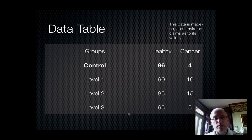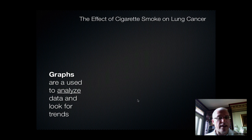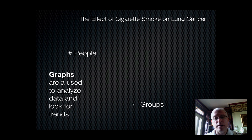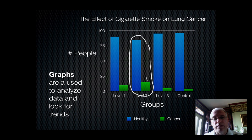The best way to evaluate data is to make a graph. Graphs need a title, so ours is 'The Effect of Cigarette Smoke on Lung Cancer.' Graphs are a good way to visually analyze data and look for trends. Our DV is the number of people, and our IV represents the experimental groups. In this simple bar chart, blue is healthy and green is cancer. You can see immediately that level two has the most cancer, which supports our hypothesis.